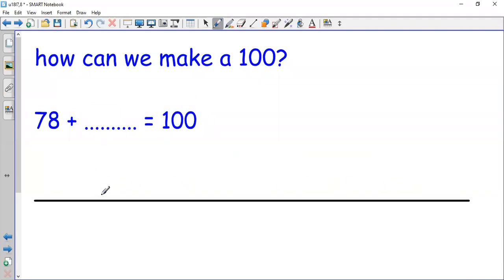To answer this question, let's imagine that I have a number line and I start from 78 and I want to land on 100. It is hard to count the steps from 78 to 100 directly, but I can break the number line into pieces. Like what?